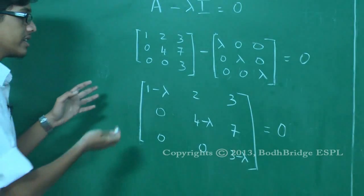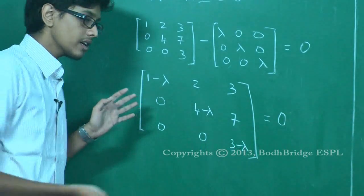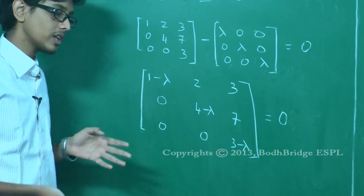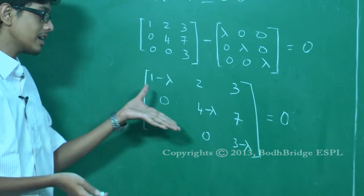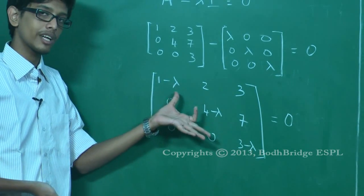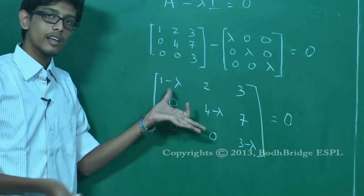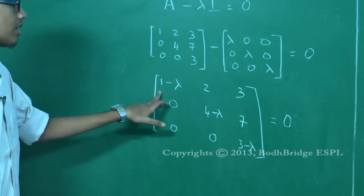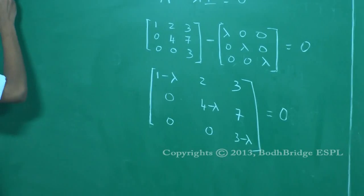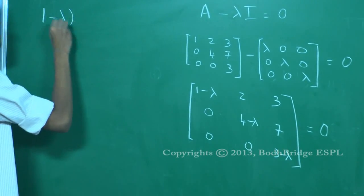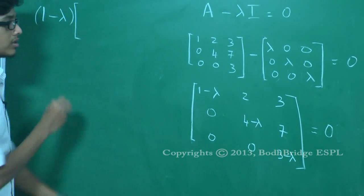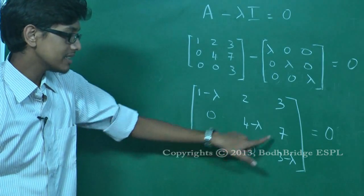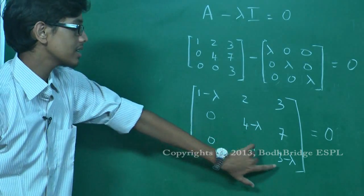We find the determinant of this matrix to get the characteristic equation, which will be a degree-three polynomial in lambda. When we solve this and get the values of lambda, those are the eigenvalues. Expanding: one minus lambda times (four minus lambda)(three minus lambda) minus seven times zero.